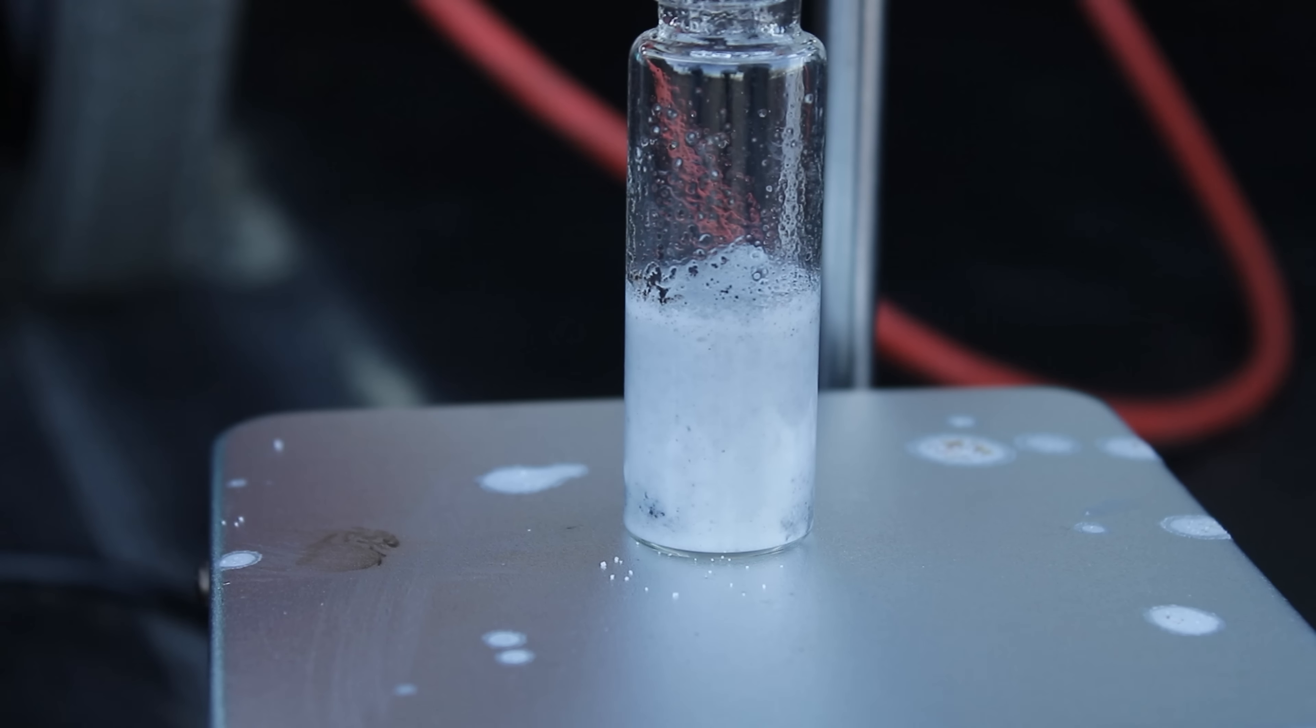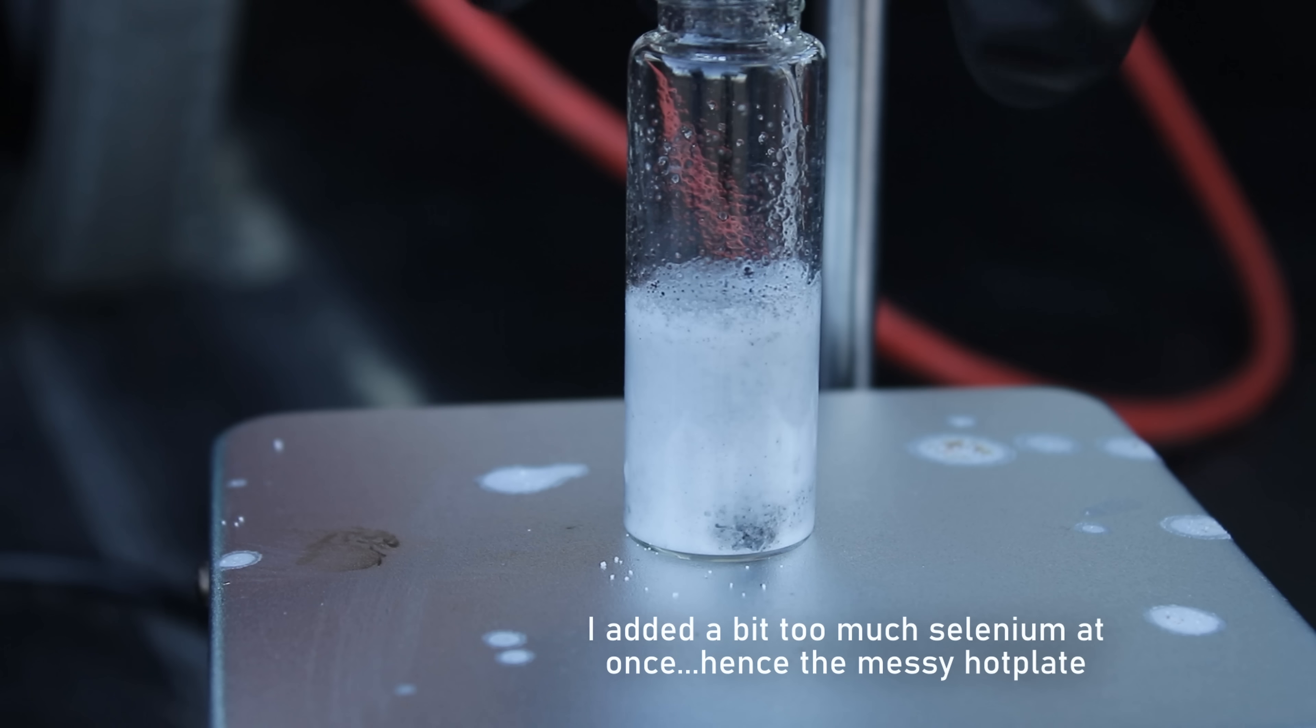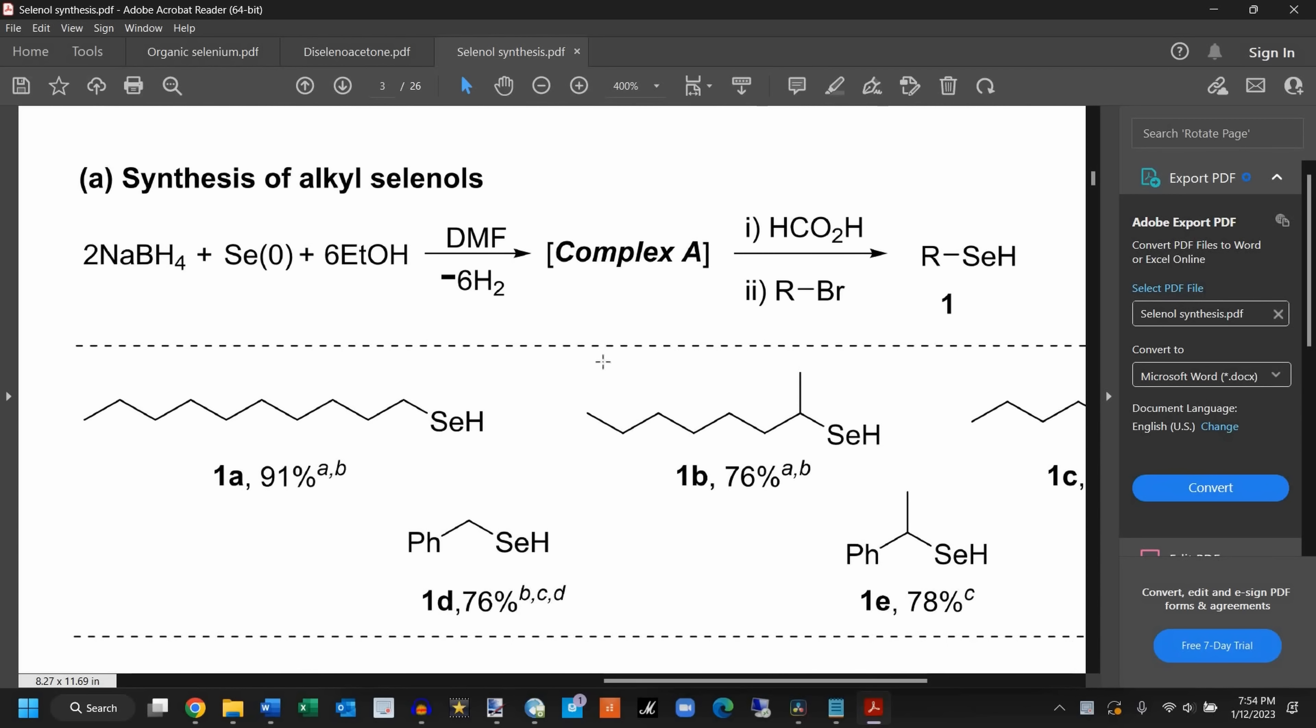You can see that my reaction mix got a little thick as more selenium was added, and this was because I didn't have enough solvent present to keep the sodium hydroselenide dissolved. The authors of the selenol paper actually recommended using an additional solvent, called dimethylformamide, or DMF, which complexes with the hydroselenide. This probably would have given a better result and a smoother reaction, but I didn't have any DMF at the time.